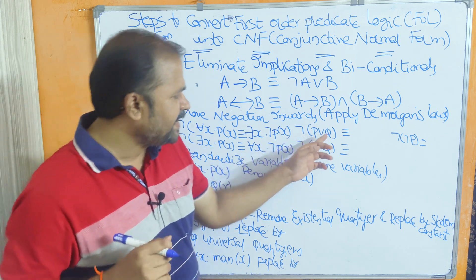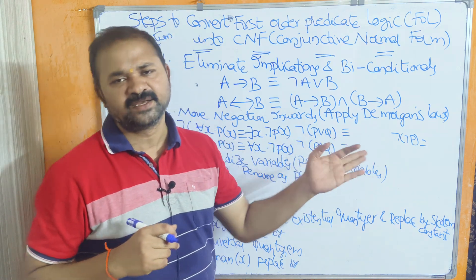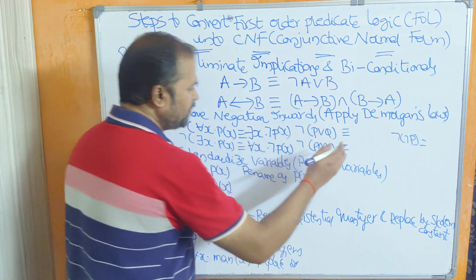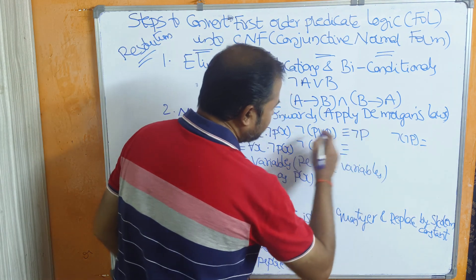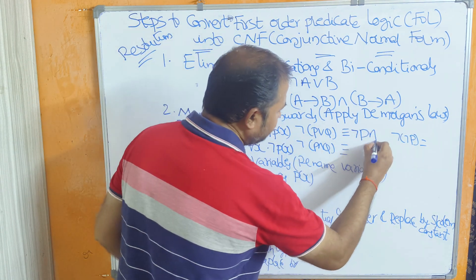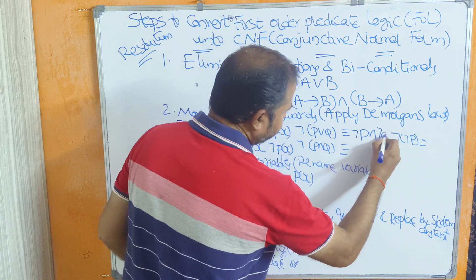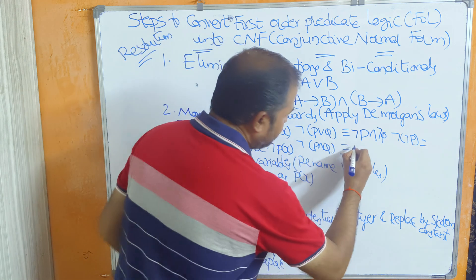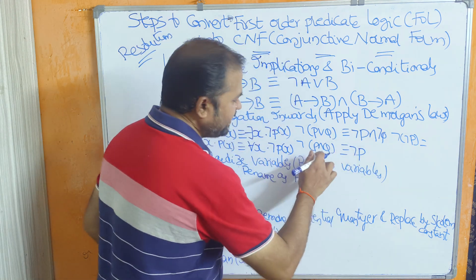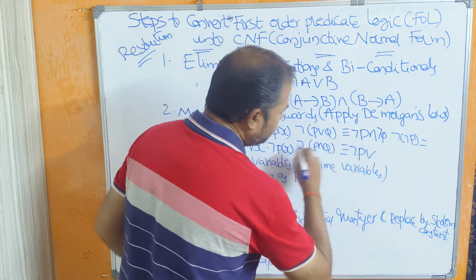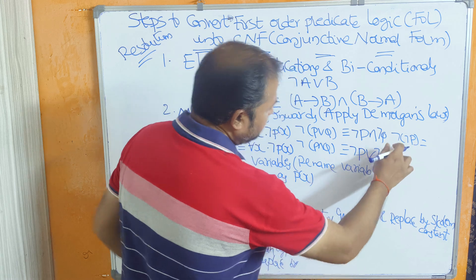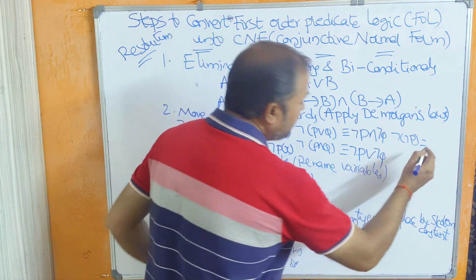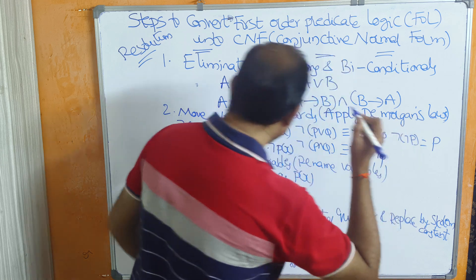Next, negation of P or Q means negation P and negation Q. Negation of P and Q means negation P or negation Q. Also, negation of negation P — by the double negation law — gives P as the output.